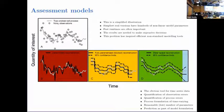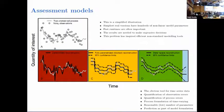The third approach is the state-space approach, where we set up a stochastic process to match what we think is going on, and then estimate it based on the available observations.